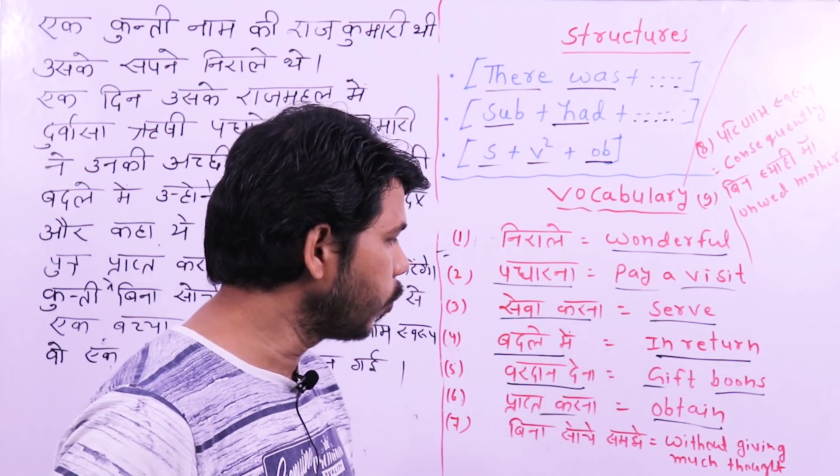Full translation: There was a princess named Kunti. She had wonderful dreams. One day, sage Durvasa paid a visit to her palace. The princess served him well. In return, he gifted her five boons and said that these boons would help her obtain sons from gods. Without giving much thought, Kunti asked sun god for a child and consequently she became an unwed mother. So that was it, friends. I hope you understood. This is a series for beginners; I'll keep bringing such translations. That's all for today — see you in the next video, guys.